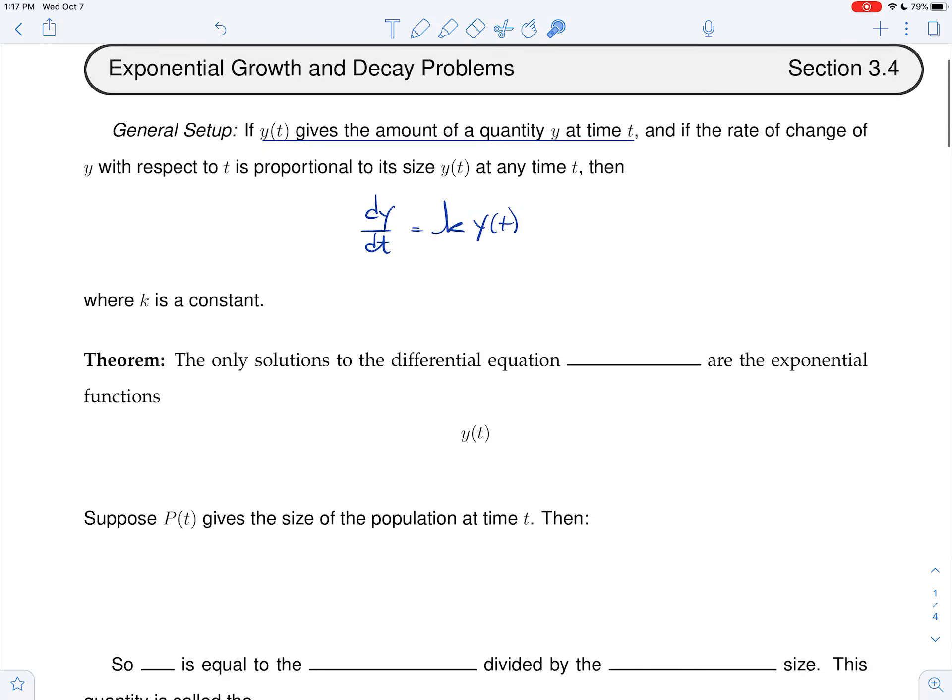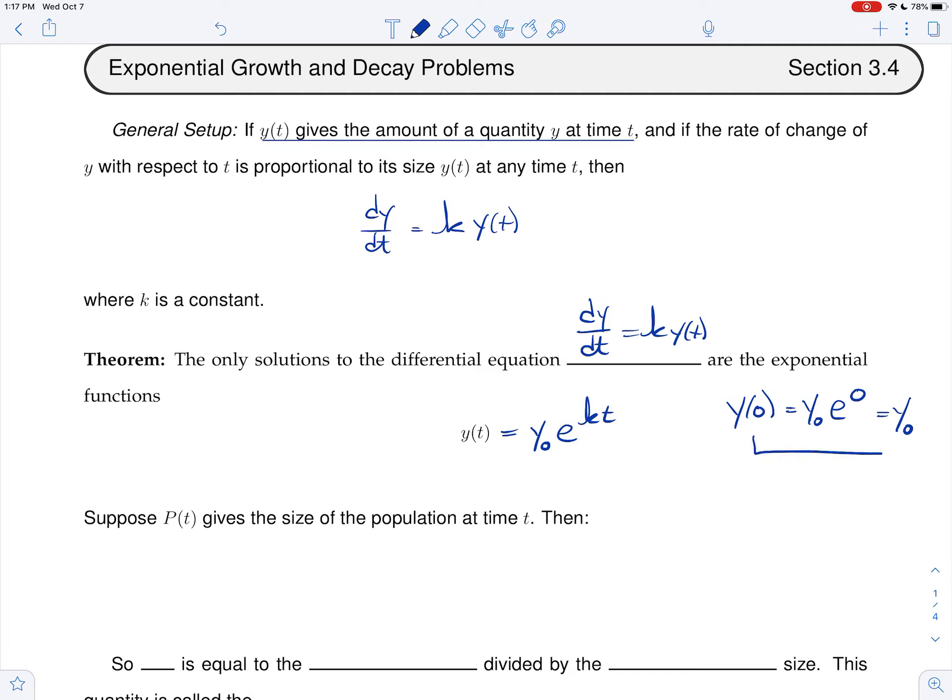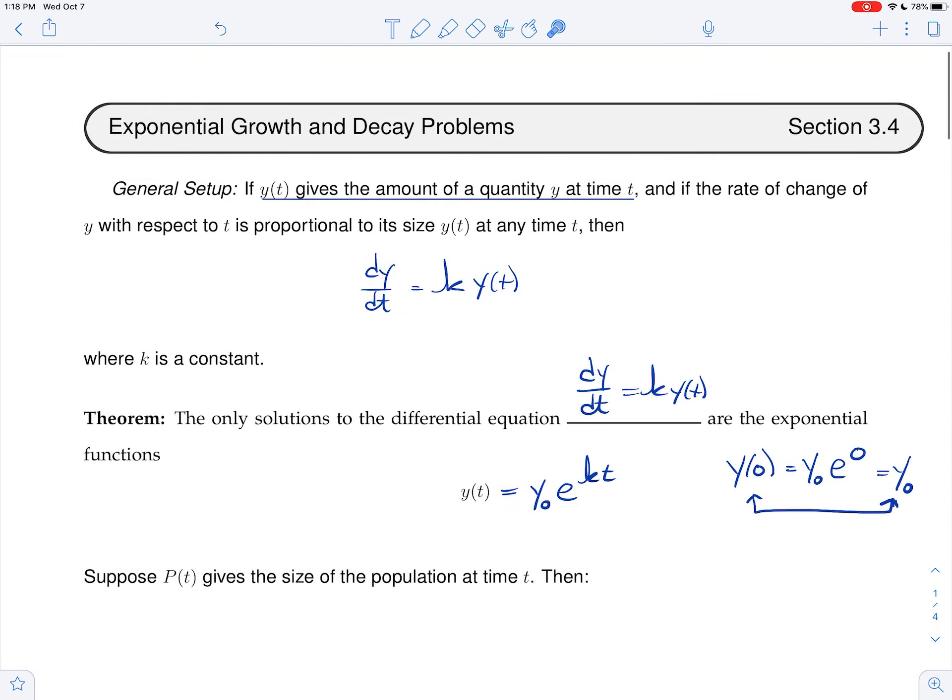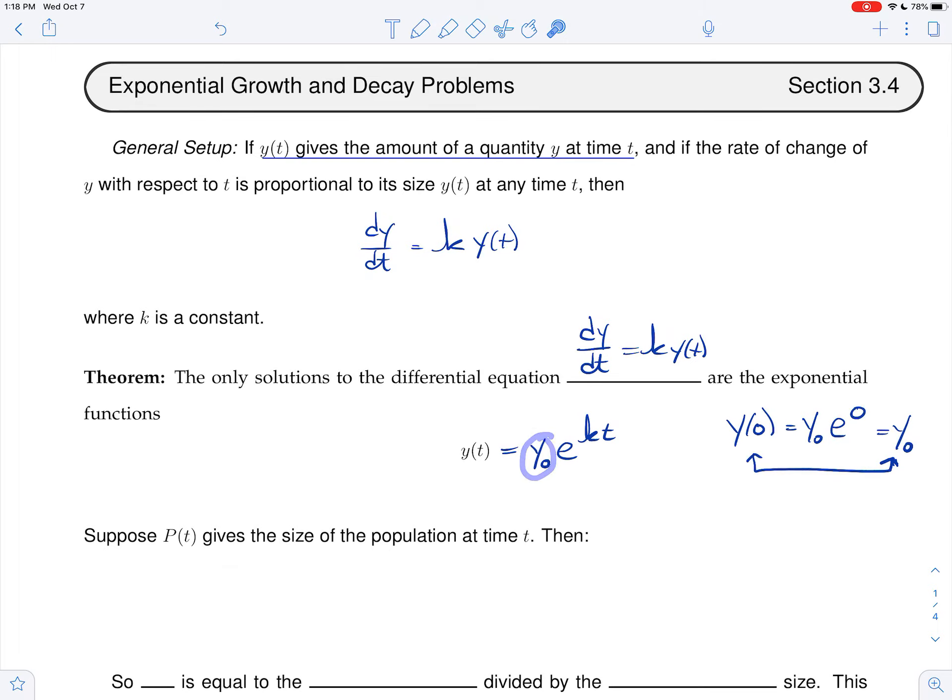And so we have the following result. The only solutions to the following differential equations, when the differential equation is the one above y prime equals k times y(t), are the exponential functions y(t) equals, I'm going to write y not, I'll tell you what y not means in just a minute, times e to the kt. Why not? What is that? Well, I want you to realize that y of zero is going to be y not, this constant e to the zero, which is just y not. And so you should realize that somebody just decided that instead of writing y of zero every time, whatever letter you put here, you could put a c for the constant, or alpha, or whatever you want. But whatever it is, that constant will always be equal to just plugging zero in for time. And so that's what the notation means. The y subscript zero actually is always the same as y of zero, and it's a constant. It's a number. Make sure that we realize that.